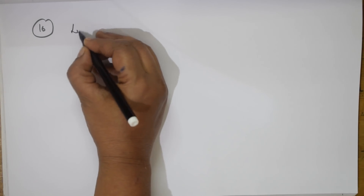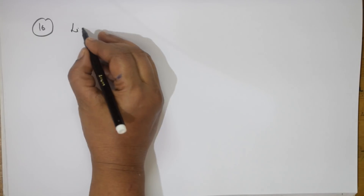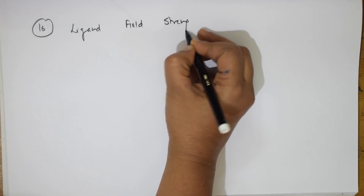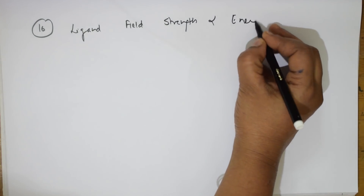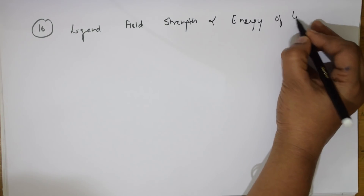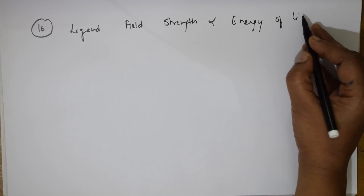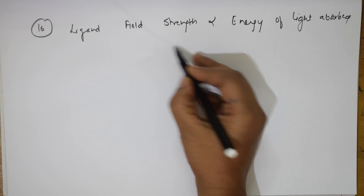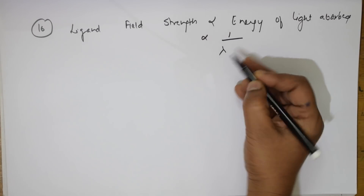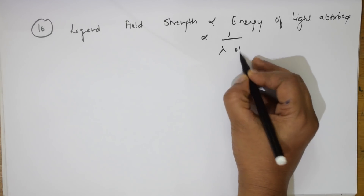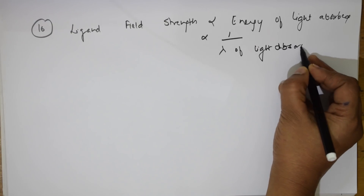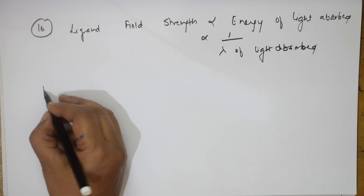The 16th concept: ligand field strength is directly related to the energy of light absorbed, and inversely related to the wavelength (λ) of light absorbed. This will be useful for your coordination chemistry chapter.